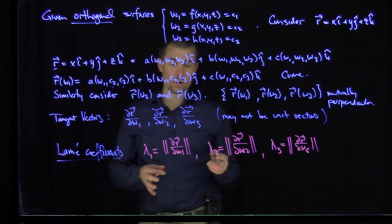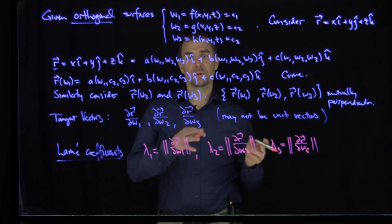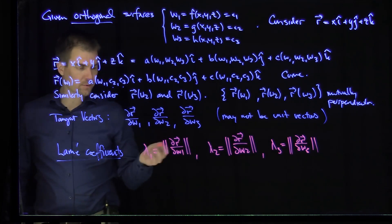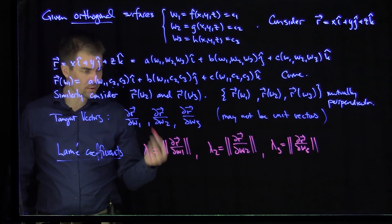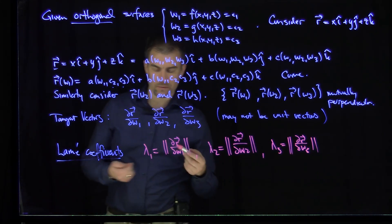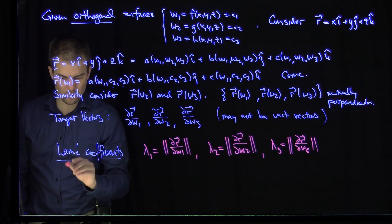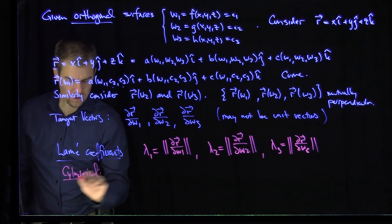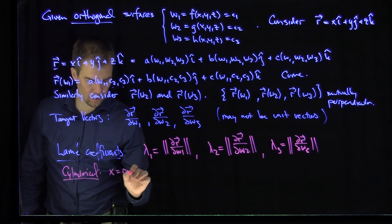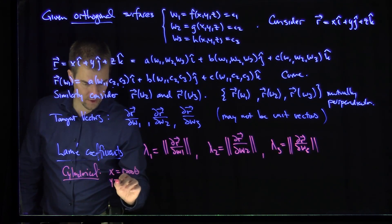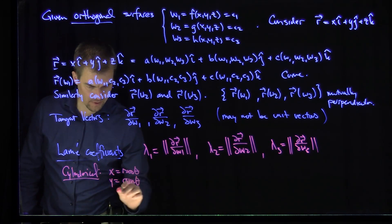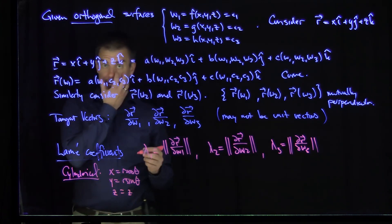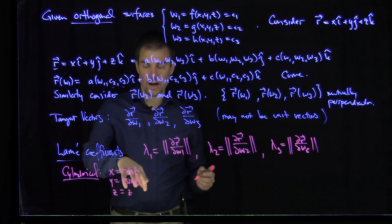In further videos, we're going to see how these Lamé coefficients can be used to simplify calculations with differential operators. For example, in spherical coordinates or polar coordinates or any curvilinear coordinate system. Let's do a simple example in cylindrical coordinates. In cylindrical coordinates, x = r cosθ, y = r sinθ, and z = z.